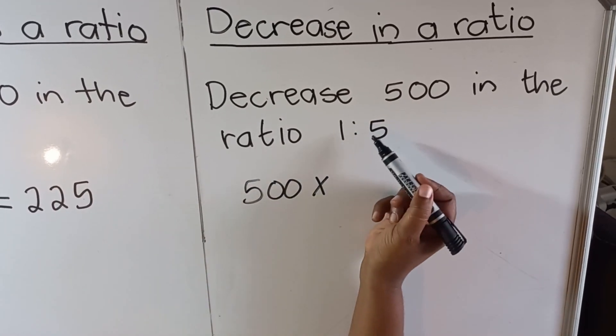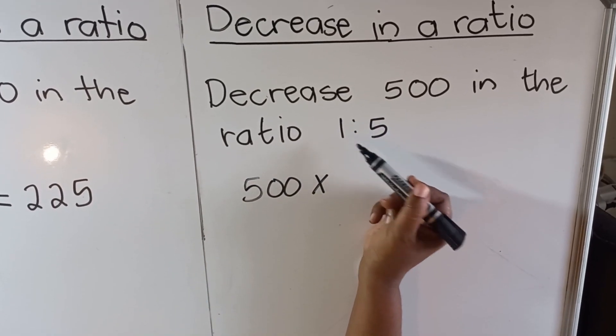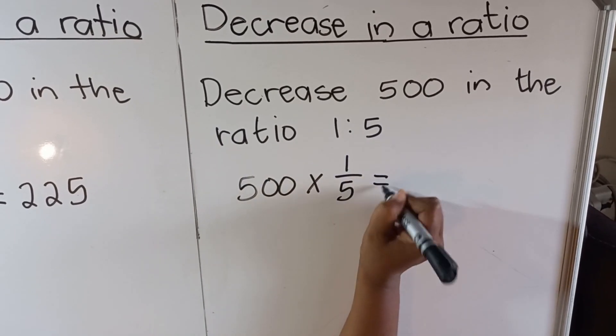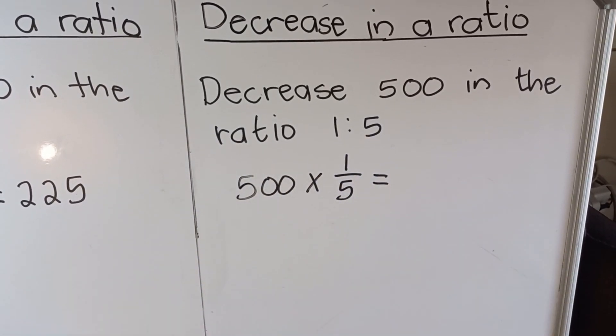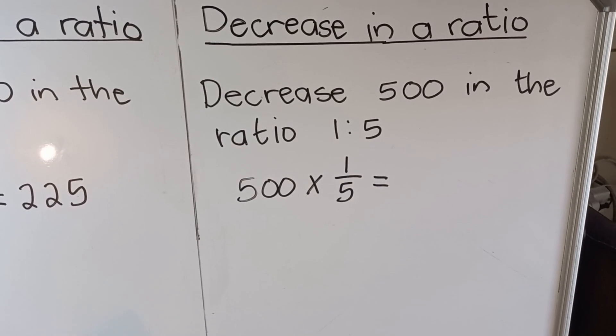When you decrease, you write the smaller number on top as a fraction, so it will be 1 over 5. And then you multiply. You would have decreased that number in a ratio 1 to 5, so it will be 500 times 1 over 5, so it will be 100.